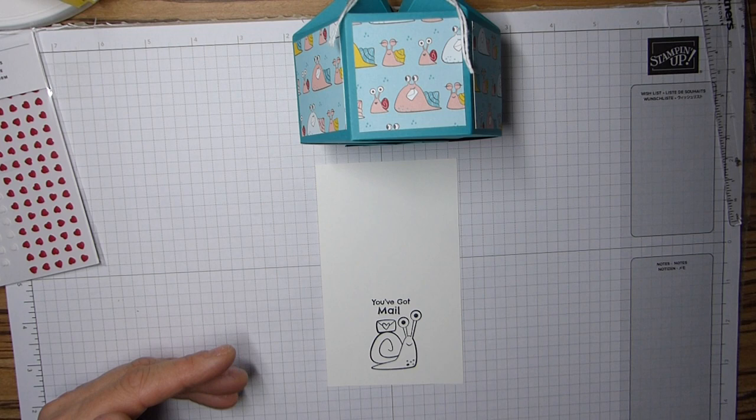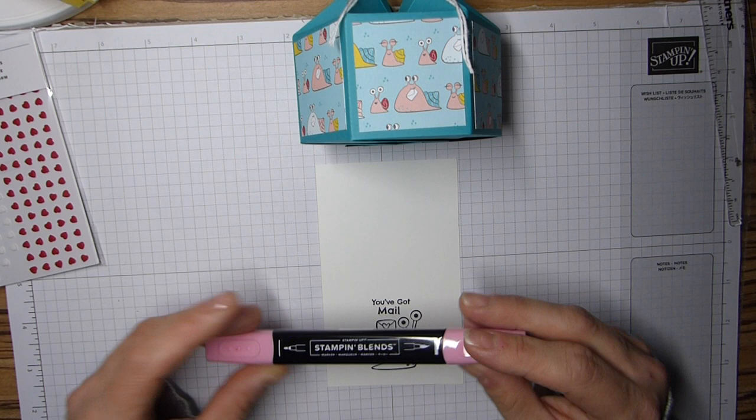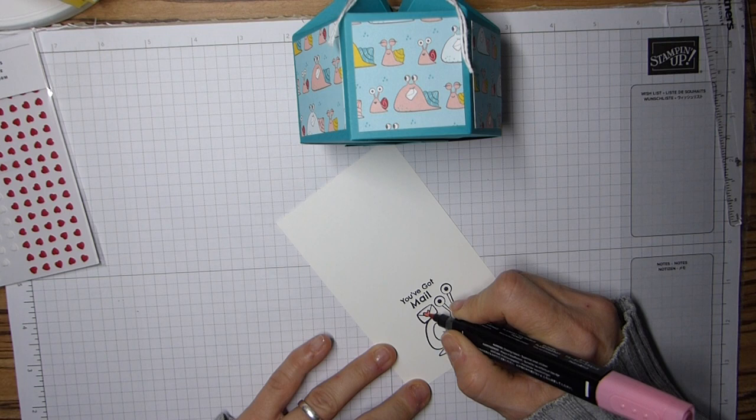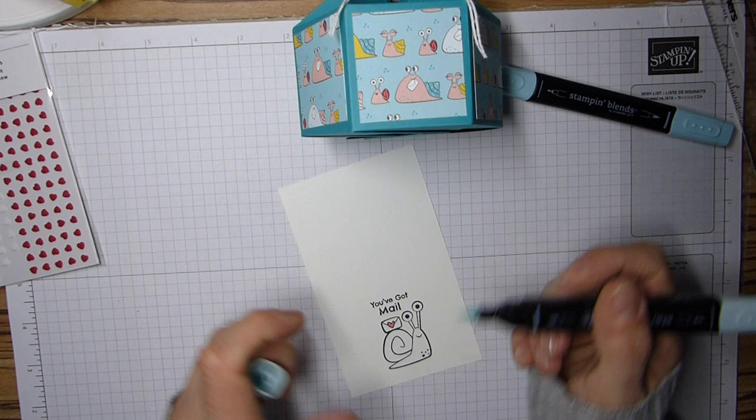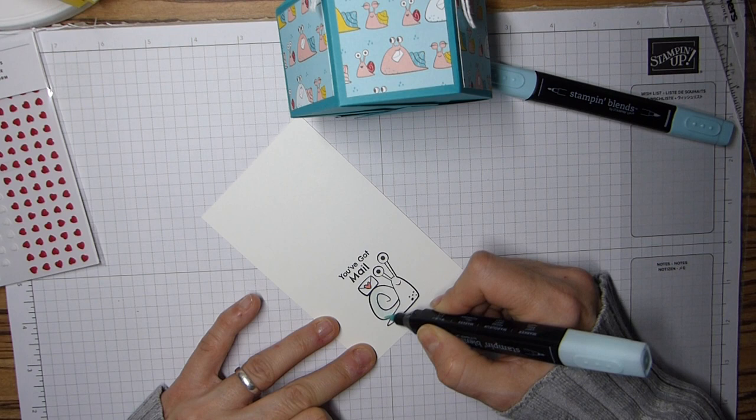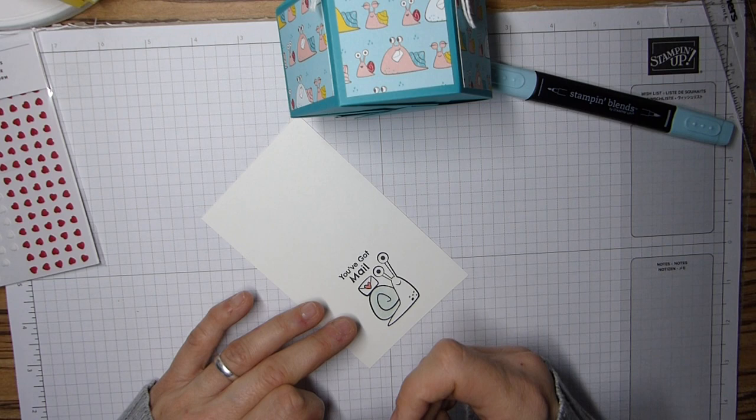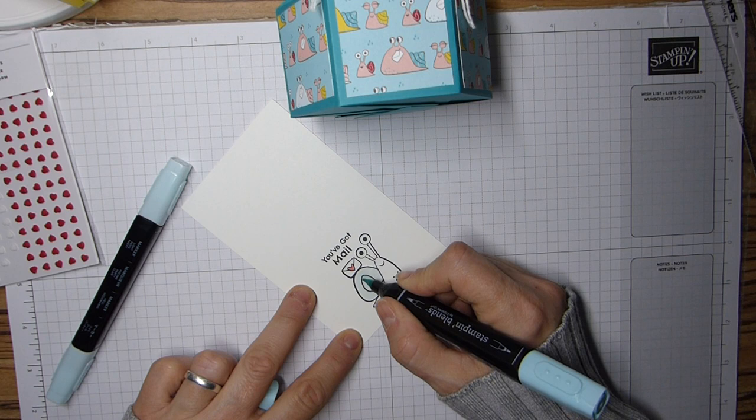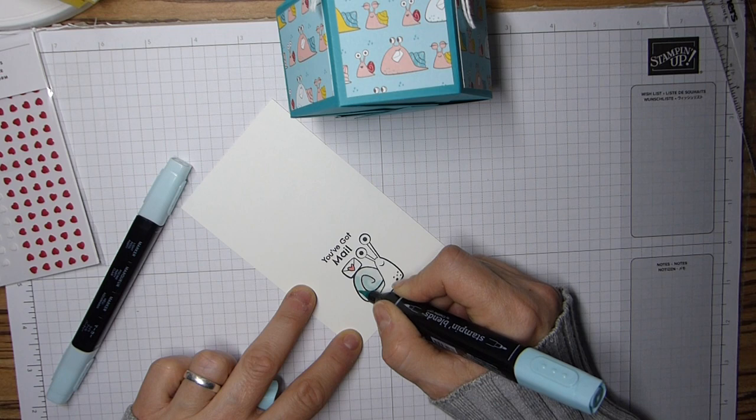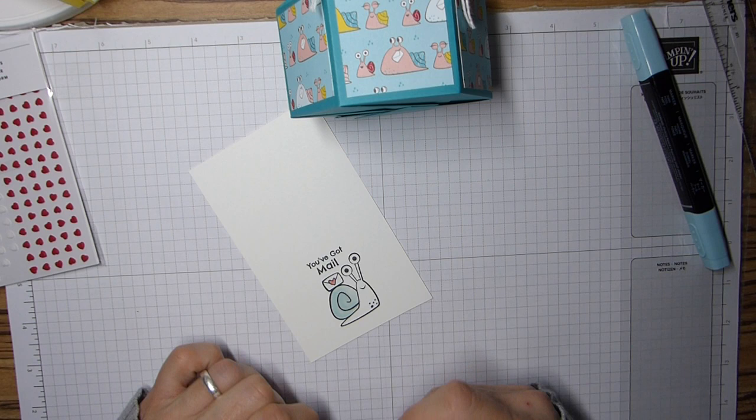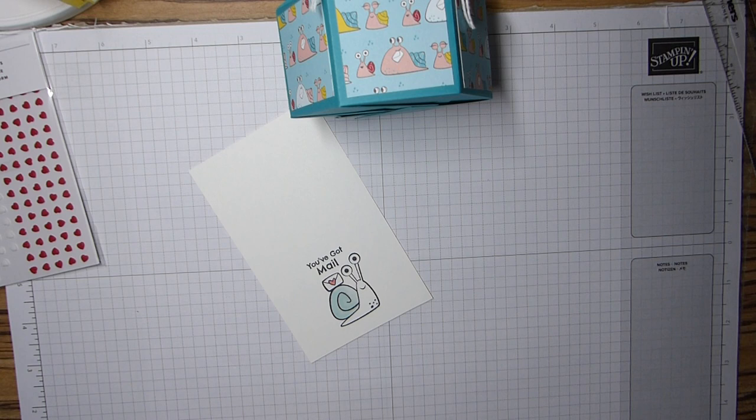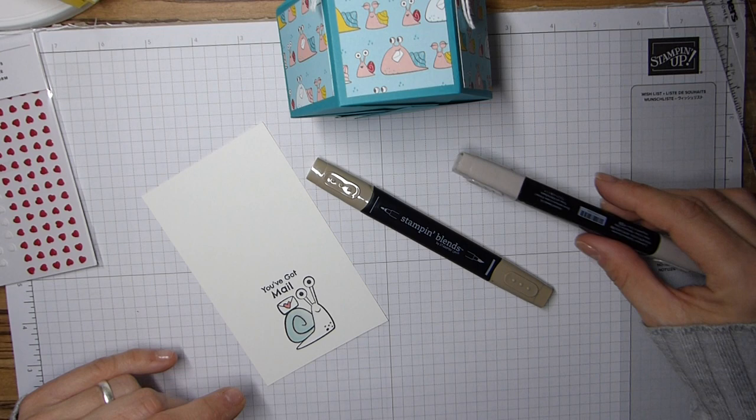And then all I need now is to give him some color. So dark flirty flamingo is literally all I'm going to go with, just to give that heart there a bit of color. I then went with my pool party light and dark, so my light is for the shell, which again you just cover all over. Then the dark one I've used just to add a bit of shade, and then back over with my light to blend that all in.